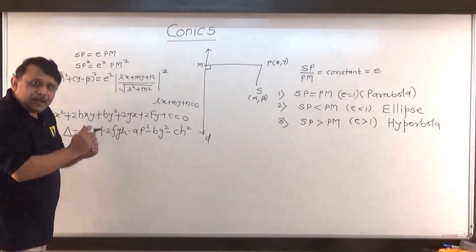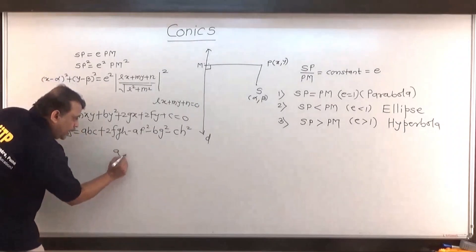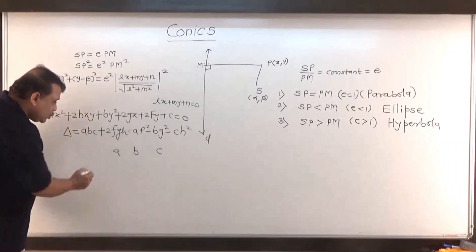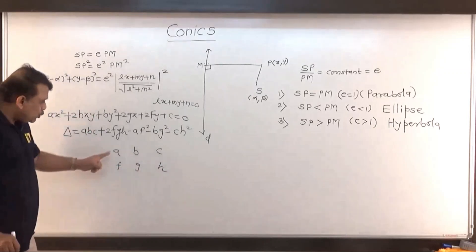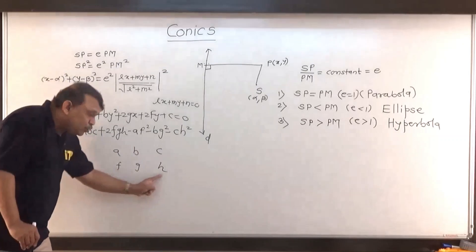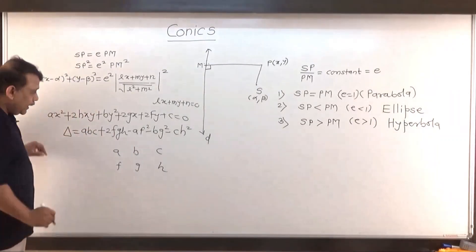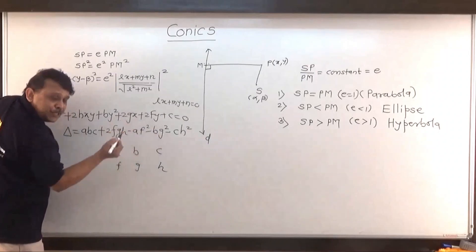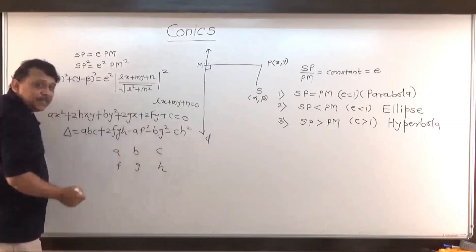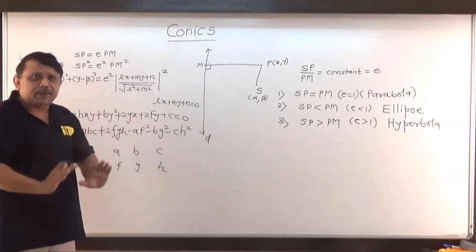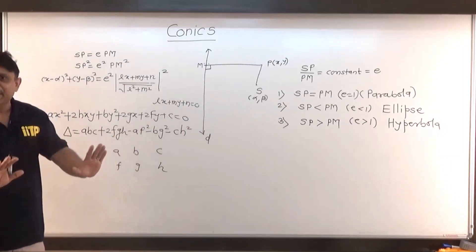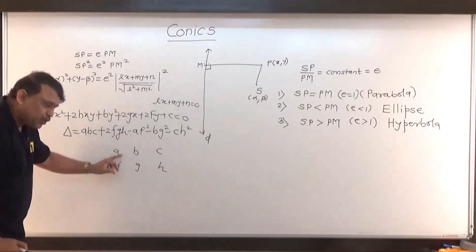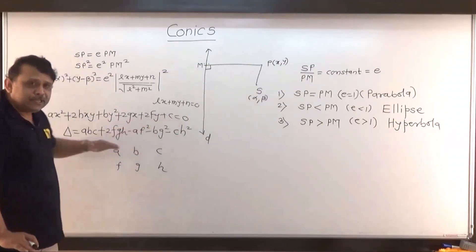I will give you an idea to remember this. Write the alphabets in alphabetical order: a, b, c — and then skipping d and e — there is f, g, h. First take the product of the three abc, then take the product of fgh and multiply by 2. Then square each and multiply: f² goes with a to give af², g² goes with b to give bg², and h² goes with c to give ch², all subtracted. So Δ = abc + 2fgh − af² − bg² − ch². This is the discriminant, and it can easily be remembered this way.